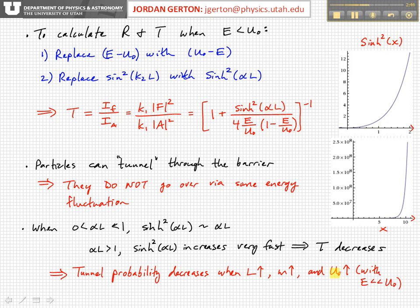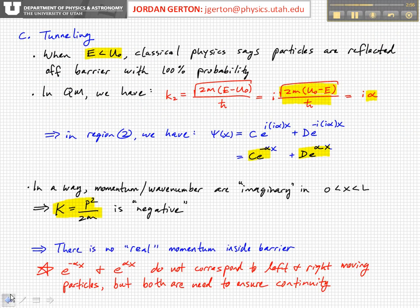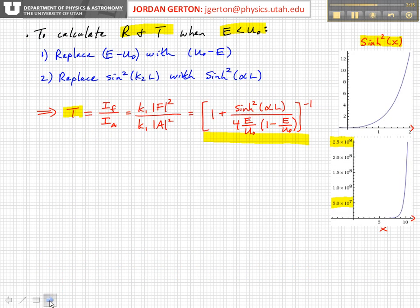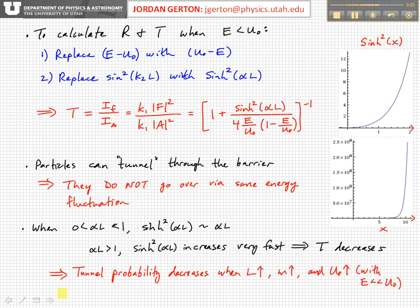And furthermore, when the barrier height is very big and when the energy is much less than the barrier height, if we look at our expression for alpha, when U not is really big and E is really small, then basically this alpha is proportional to the square root of U not. So when U not gets really big, especially compared to E, then we'll also have very low probability for tunneling. If your particle comes in with very low energy compared to a very tall barrier height, then you won't get tunneling.